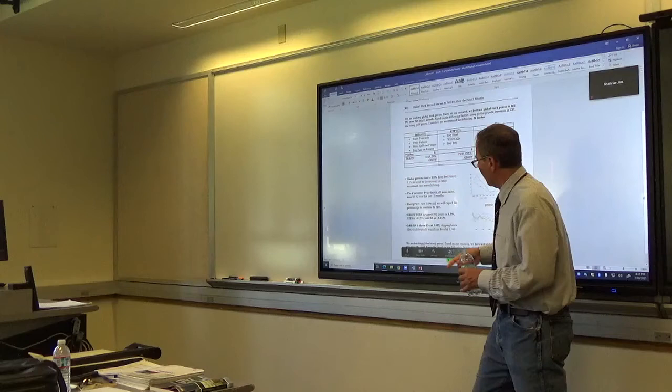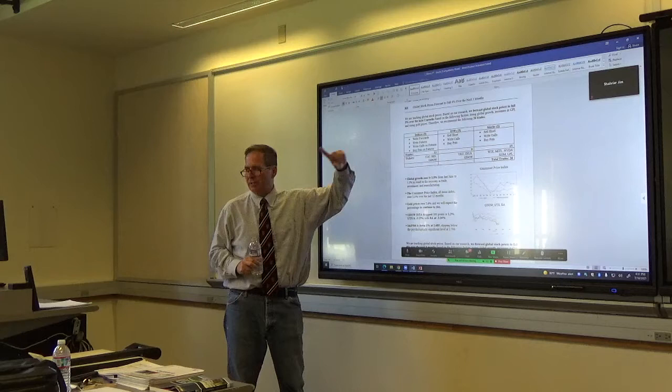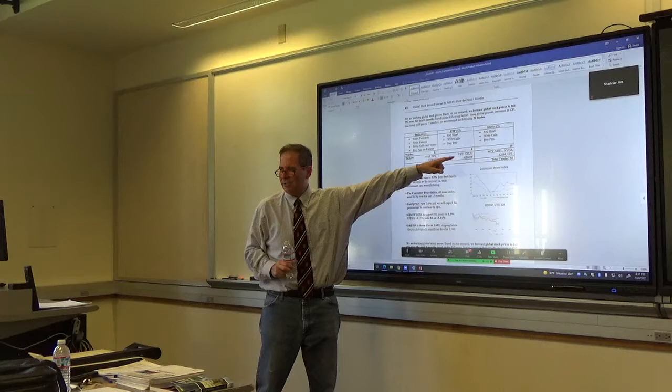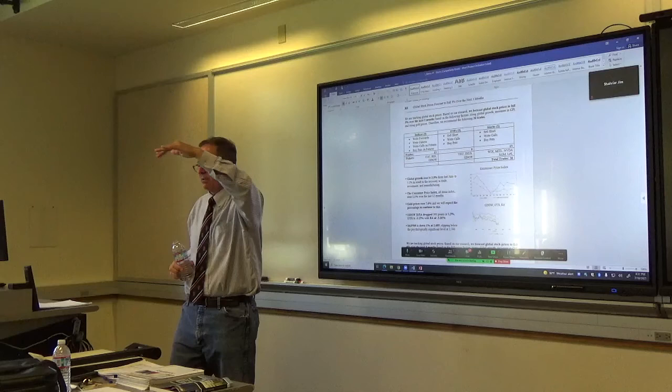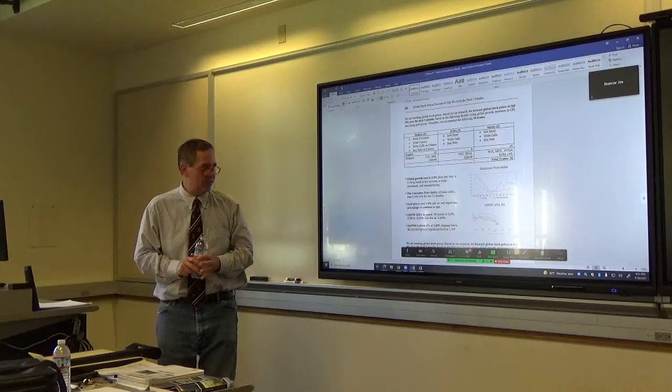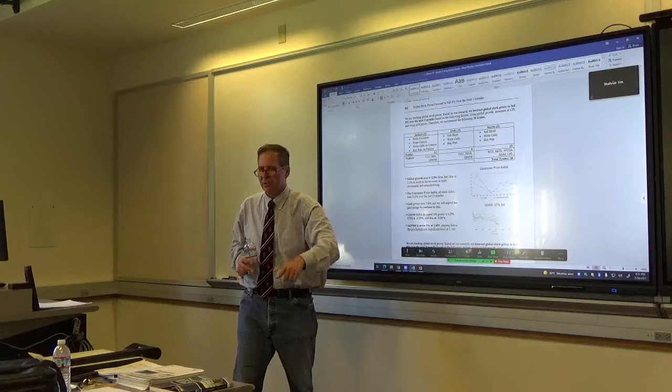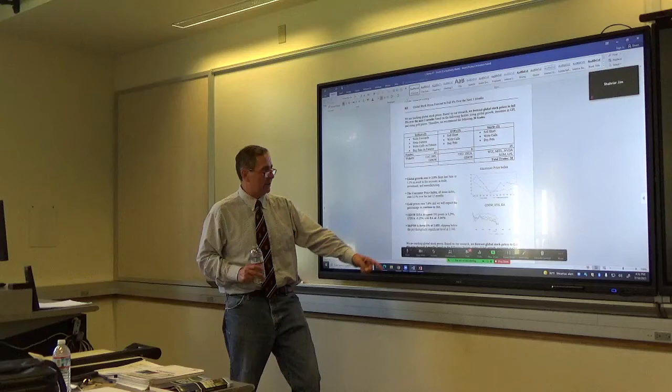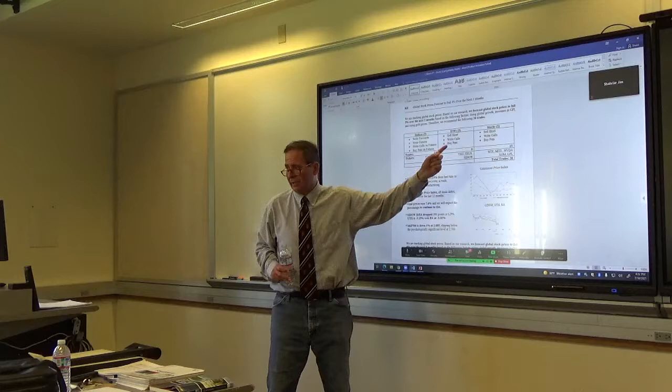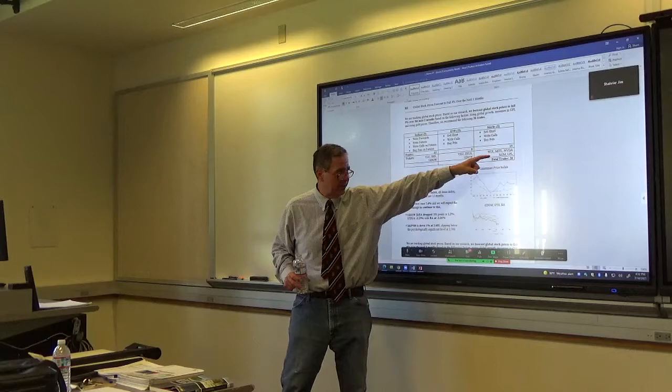We're going to buy, we're going to, because they're going to fall, we're writing forwards, writing futures, writing calls on futures, and buying puts on futures for the indexes. For the ETFs, we found three exchange traded funds. You can go Google and say, you know, S&P 500 exchange traded funds. They're going to give you the ticker. You can go into them. That's all you got to do is just put three ETF tickers right there. If you think that the ETF share prices are going to fall, you're going to sell short, write calls, buy puts. If you think that the stock prices are going to fall, you're going to sell short, write calls, buy puts. So these two are exactly the same.